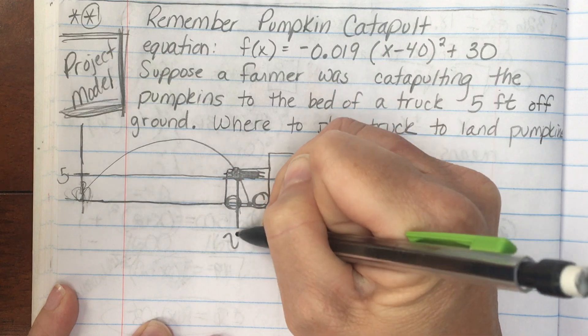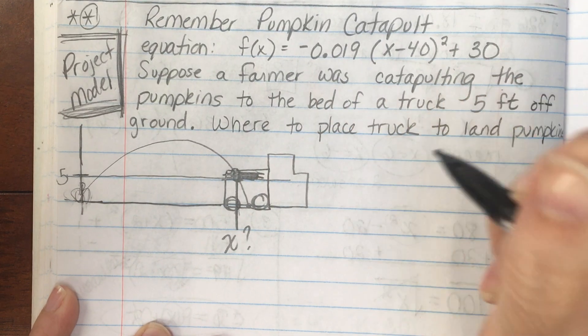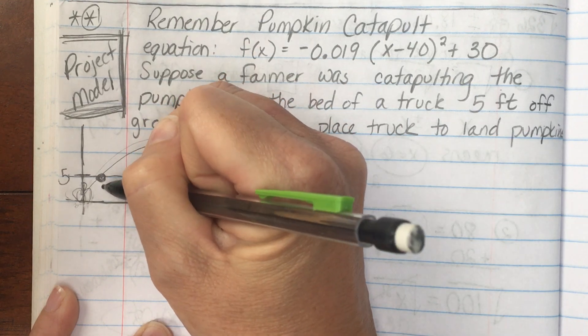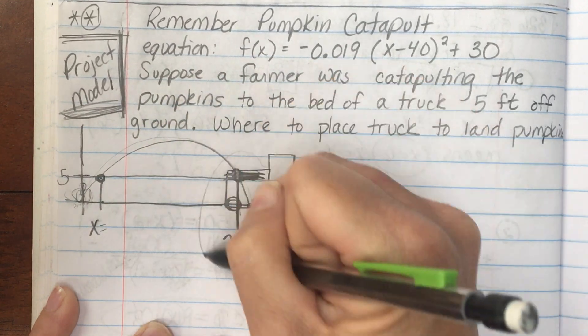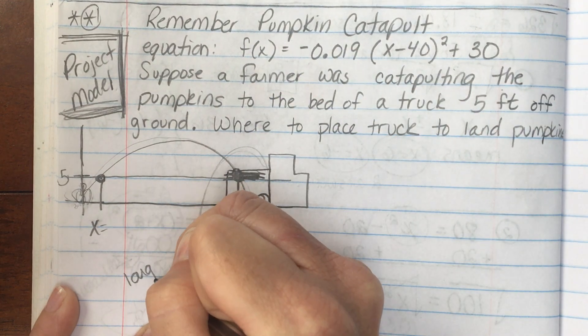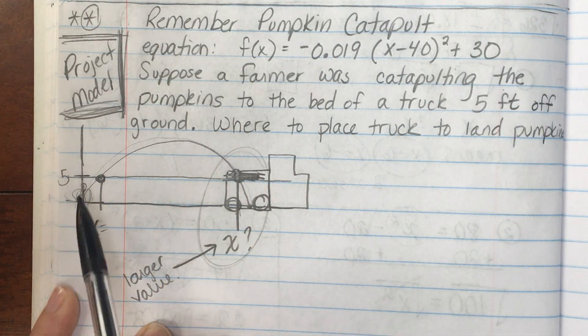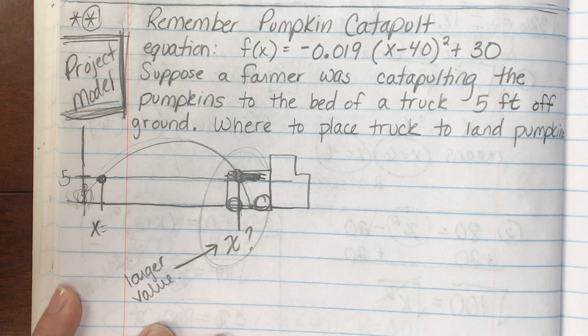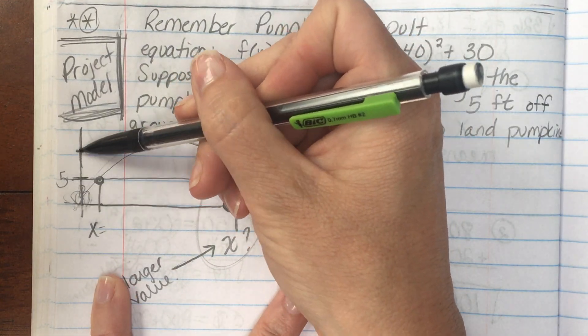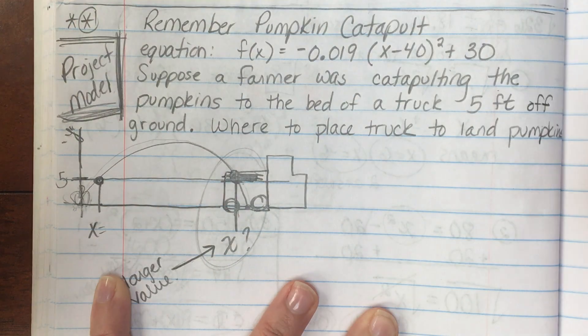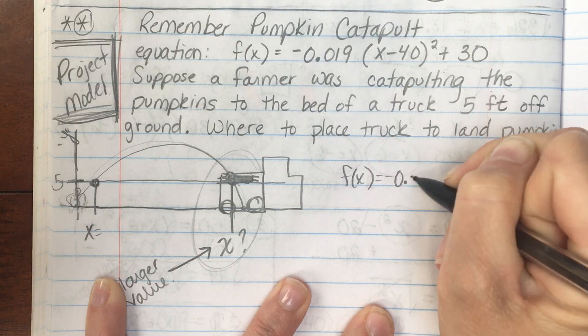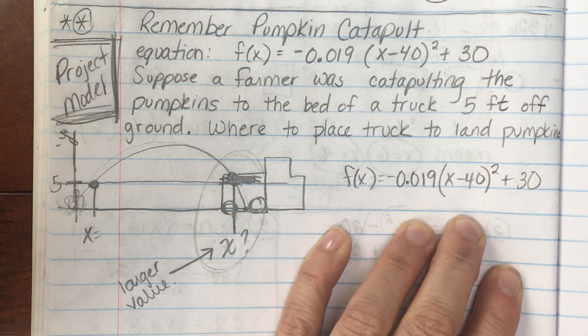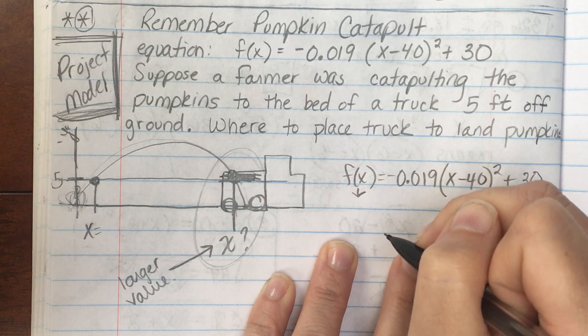We need to determine this value for x. We don't know what that value for x is. Now notice though on the graph, the pumpkin will go up and land. It will hit 5 feet at 2 spots. But you want this side. You want the larger value for x. We want the one, not when the pumpkin's going up in the air. We want the one when the pumpkin's coming back down to land into the truck. So the 5, notice how the 5 is 5 feet off the ground. And that is on your y-axis. So in this equation, this was your original equation. I'm just copying it. In your equation, you are going to put 5 in for f of x. In for the height.